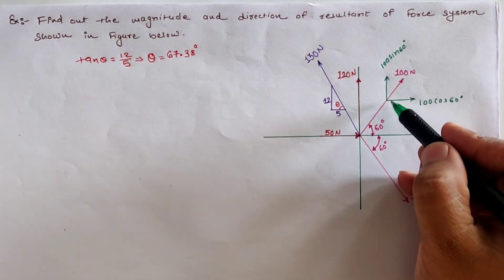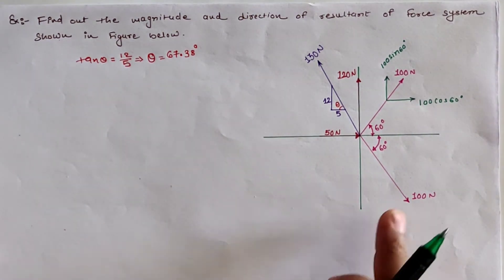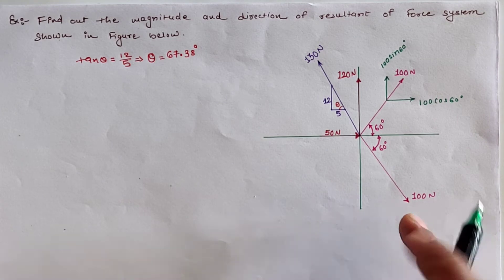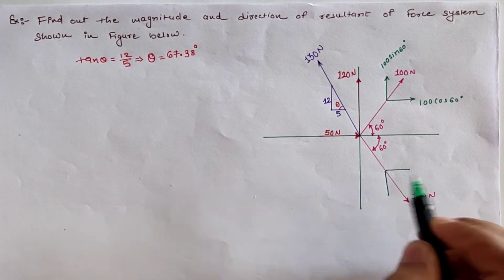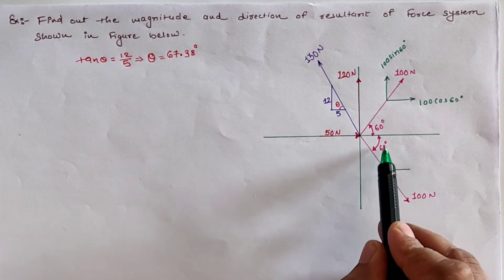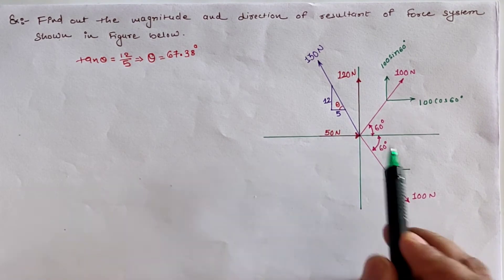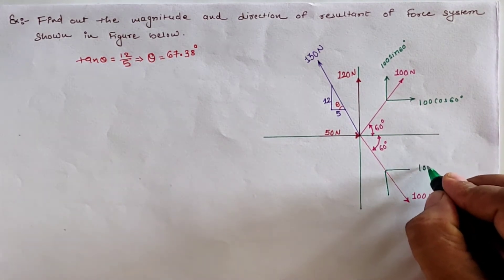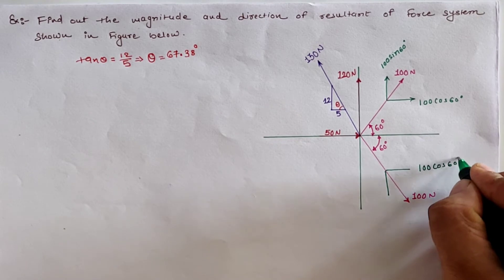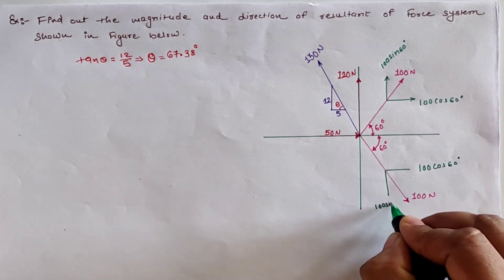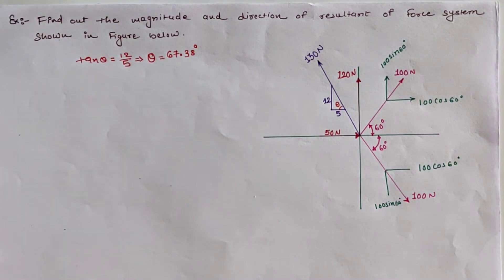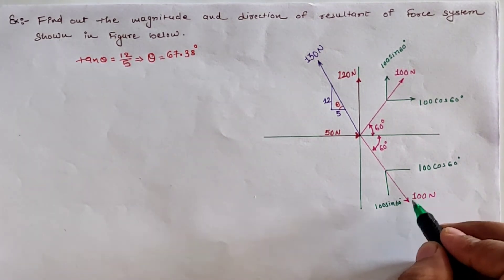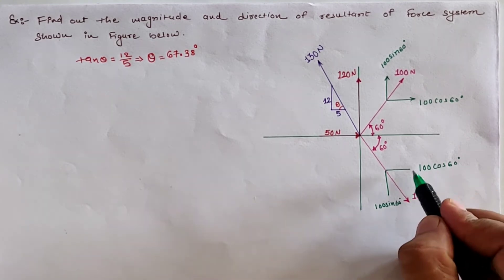For the second 100 newton load, resolving into two mutually perpendicular axes: observing the angle with the x-axis, the horizontal component is 100 cos 60 and the vertical component is 100 sin 60. Since this 100 newton load is also directed outward, both resolved components are drawn in the outward direction.